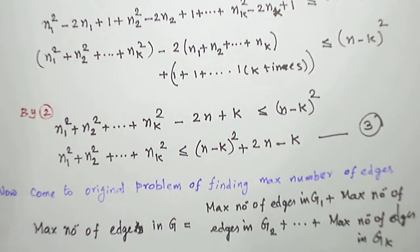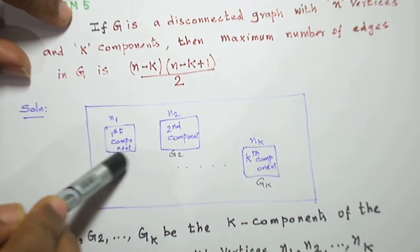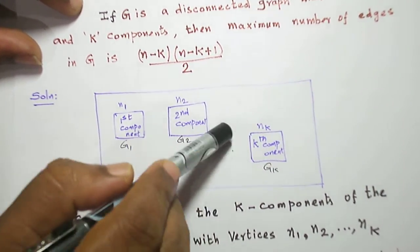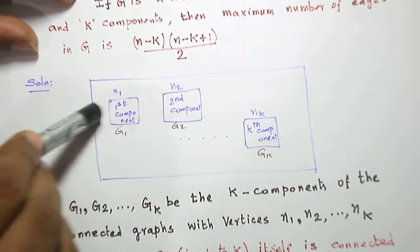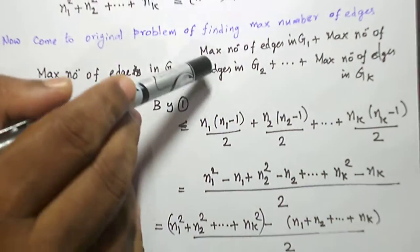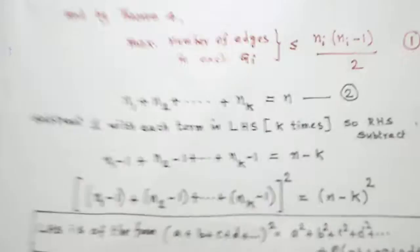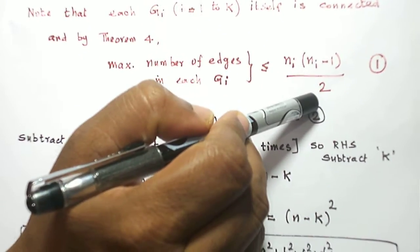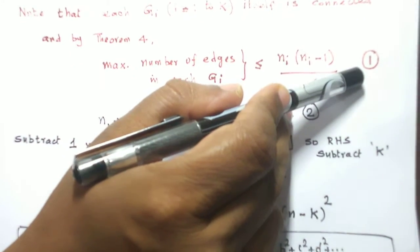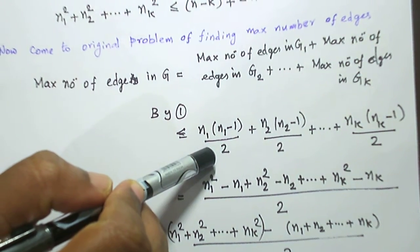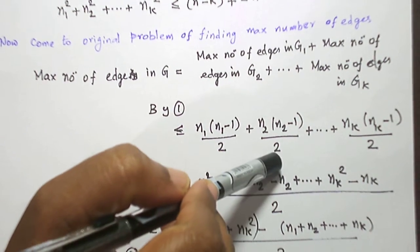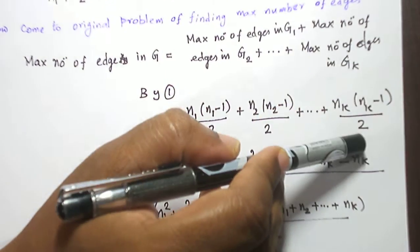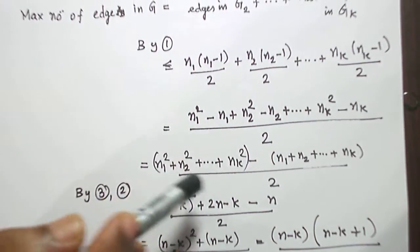Now let us answer the main question: the maximum number of edges in G. I calculate the maximum number of edges in G1, G2, ..., Gk separately. Adding them all gives the maximum number of edges in the original graph. Since G1 is itself a connected graph, its maximum number of edges is n1(n1-1)/2 by Theorem 4. Similarly for G2 it is n2(n2-1)/2, and for Gk it is nk(nk-1)/2.